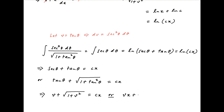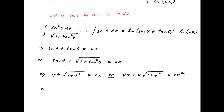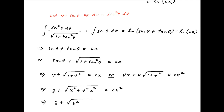Multiplying both sides with x, we get vx + x√(1 + v²) = cx². Now vx = y, so this becomes y + √(x² + v²x²) = cx². Again replacing vx with y, we get y + √(x² + y²) = cx², which is the required solution.